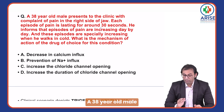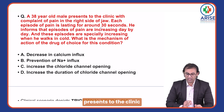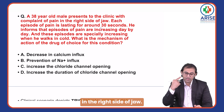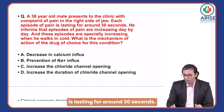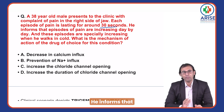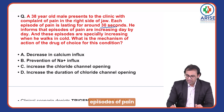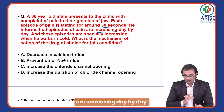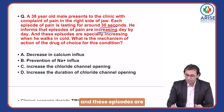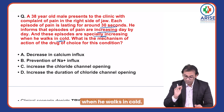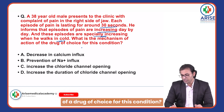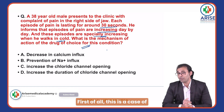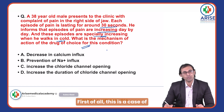A 38-year-old male presents to the clinic with complaint of pain in the right side of the jaw. Each episode of pain lasts around 30 seconds, and the episodes are increasing day by day — especially when he walks in cold. What is the mechanism of action of the drug of choice for this condition? First, what is the diagnosis? This is a case of trigeminal neuralgia.